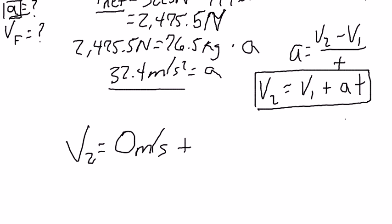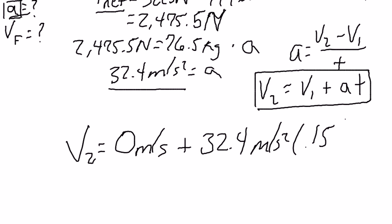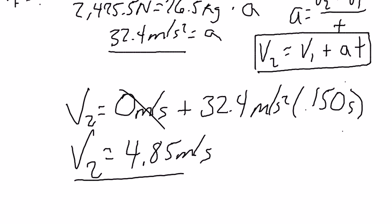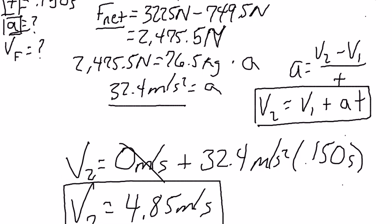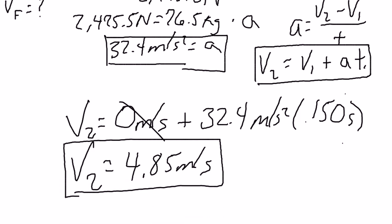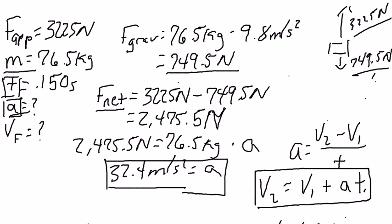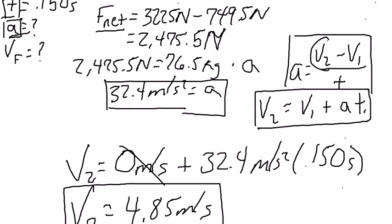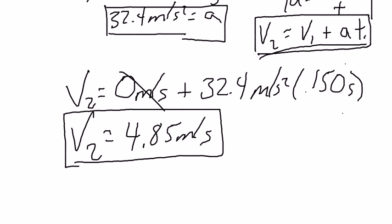We add the acceleration we just calculated — 32.4 meters per second squared — multiplied by the time, 0.150 seconds. The zero meters per second drops out, and you get a final velocity of 4.85 meters per second. So we've solved for acceleration and final velocity. This problem had a lot of steps: starting with the force of gravity, solving for net force, using F net equals mass times acceleration to find acceleration, and then using the kinematic formula to solve for final velocity.